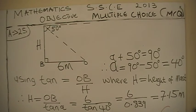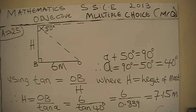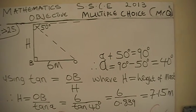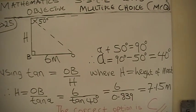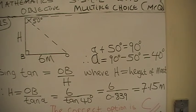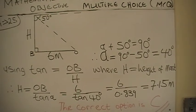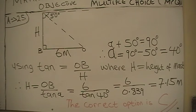Over tan 40 degrees, which gives us 6 over 0.39. Since tan of 40 degrees equals 0.39, this gives us 7.15 meters. The correct option for this question was option C.